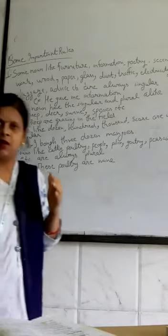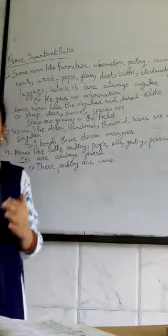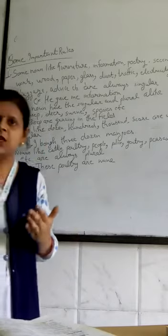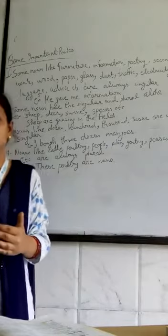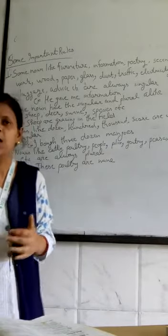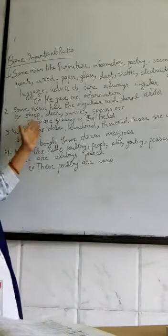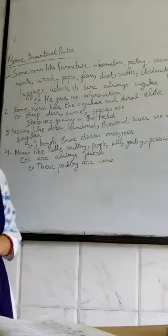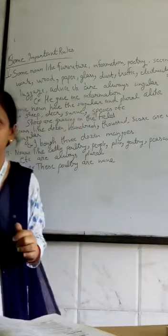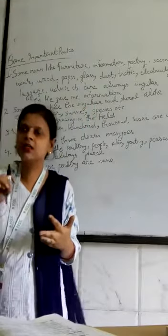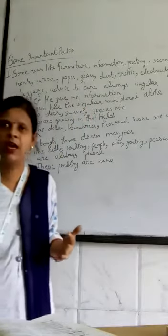Number two: some nouns have the singular and plural alike. In any sentence, if we want to use this word in singular, then we will use it as is, and if we want to use it plural, then we will use it as it is. For example: sheep, deer, swine, species, etc.